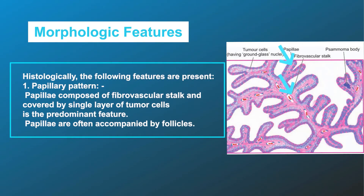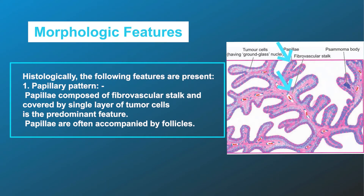Histologically, the following features are present. First, papillary pattern: papillae composed of a fibrovascular stalk and covered by a single layer of tumor cells is the predominant feature. Papillae are often accompanied by follicles.